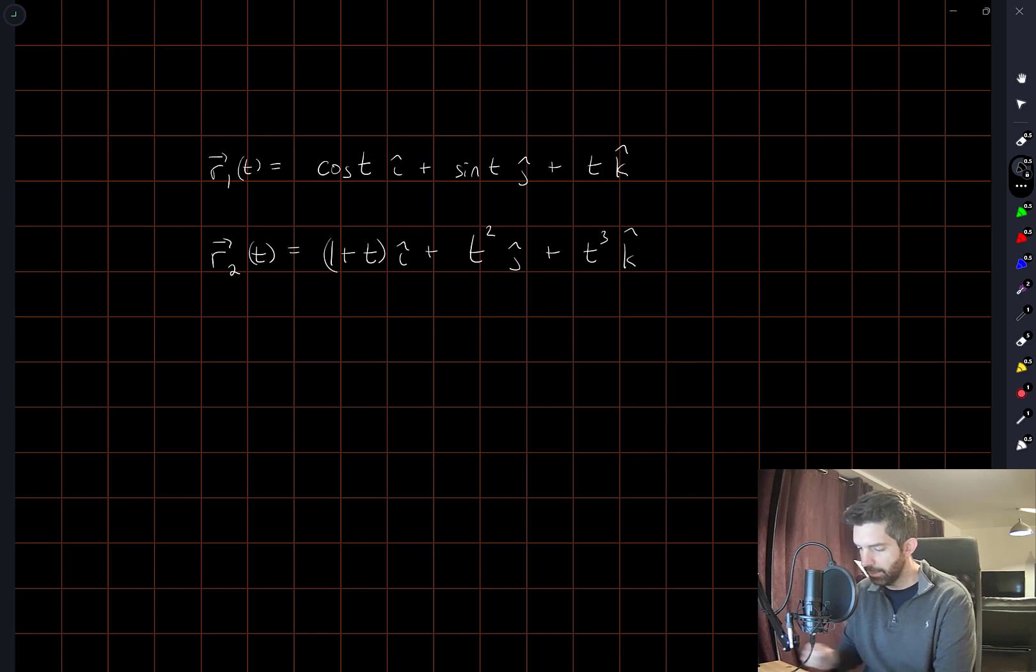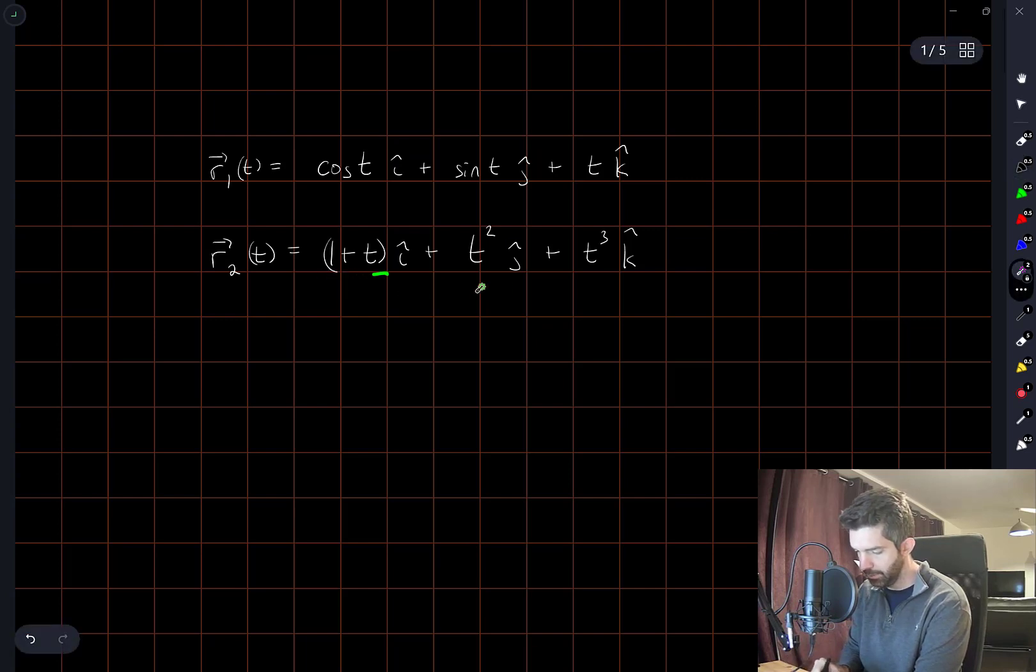Let me start by writing down everything that we're given here. So we could check that these curves intersect at the point (1,0,0). If I look at the second curve to get (1,0,0), I clearly need t to be equal to 0. And then r1 of 0, well the coordinates here, this is just going to be i hat. And r2 of 0 will also give me i hat.